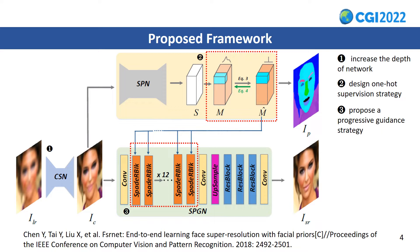The proposed framework differs from FSR-NET in the following three aspects. First, we increase the depth of the coarse super-resolution network, which is beneficial to recovering facial structure information. Second, we propose a one-hot supervision strategy to improve the accuracy of the predicted semantic maps. Third, we design a progressive guidance network to improve the guidance accuracy.